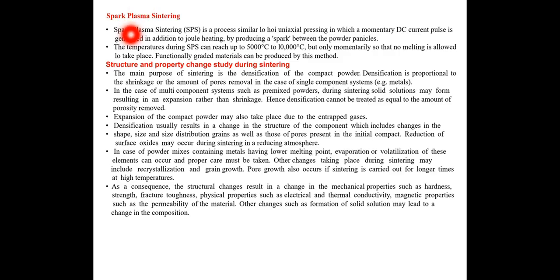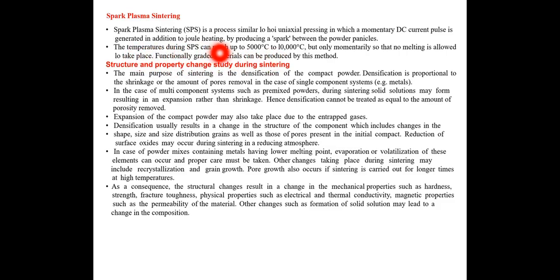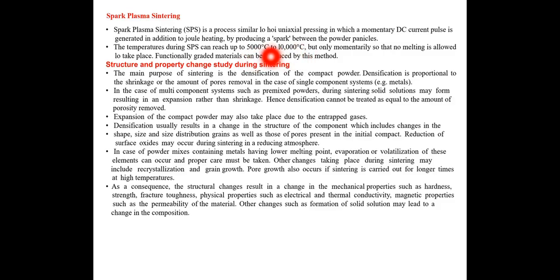Spark plasma sintering is a process similar to hot uniaxial pressing, in which a momentary DC current is generated in addition to Joule heating by producing a spark between the powder particles. A spark is produced in between the powder particles, and the temperature during this process can reach up to 5000 to 10,000 degrees Celsius — a very high temperature is produced.